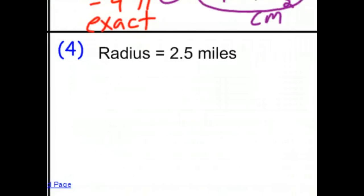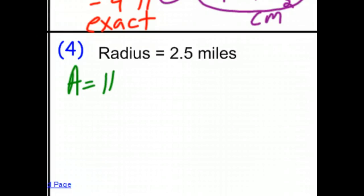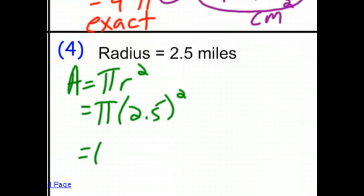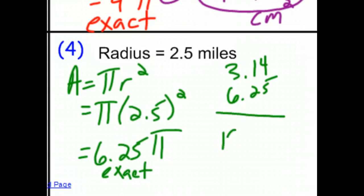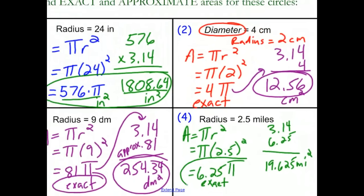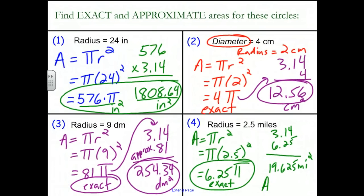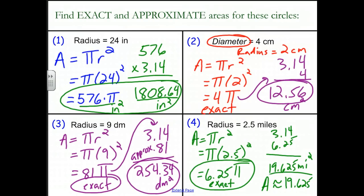Finally, a radius of 2.5 miles for number four. Area equals π r squared. The radius is 2.5, so we take π times 2.5 times 2.5. 2.5 squared is 6.25, so the exact area is 6.25π. For the approximate value, we have 3.14 times 6.25, and when we multiply those together we end up with 19.625 square miles. So the area is exactly 6.25π and approximately 19.625 square miles.